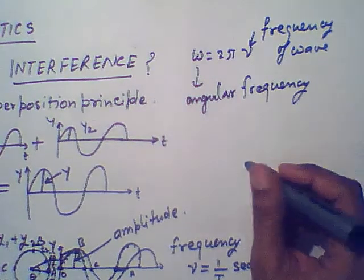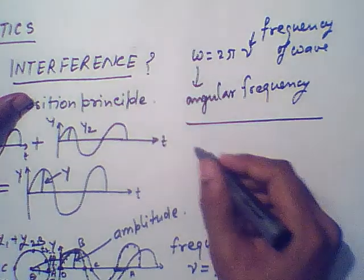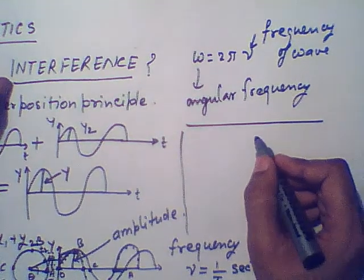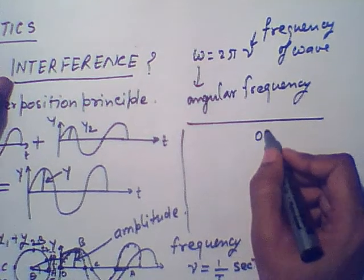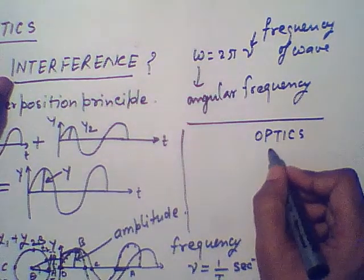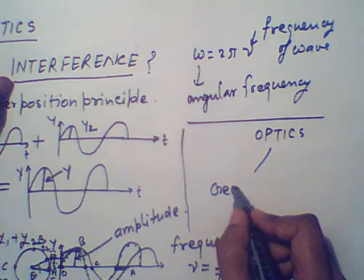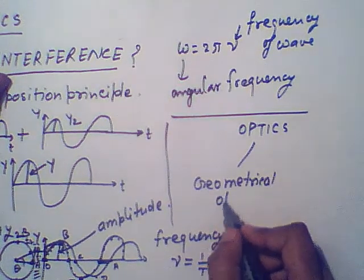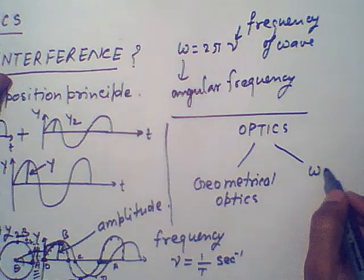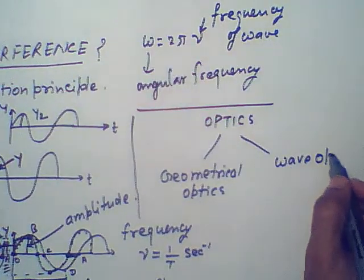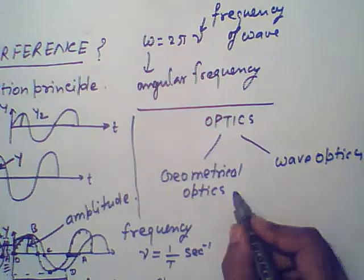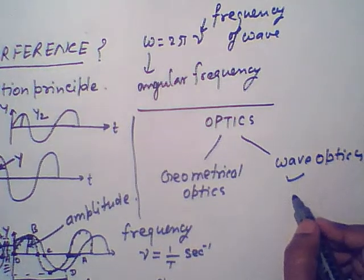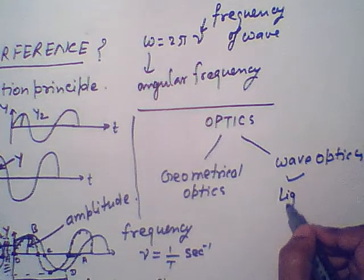These are the basic terminologies needed to explain interference. Interference comes under wave theory. Optics is categorized into two parts: one is geometrical optics and the second is wave optics. In our case, we are studying wave optics, where light is treated as a wave.